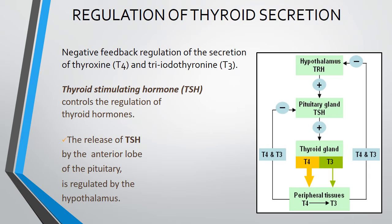Now, the regulation of thyroid secretion involves the negative feedback regulation of T4 and T3. The thyroid stimulating hormone (TSH) controls the regulation of thyroid hormone. TSH is produced from the anterior pituitary gland, and the releasing hormone TRH is produced from the hypothalamus. From the hypothalamus, TRH triggers TSH release from the anterior pituitary, which then stimulates secretion of T3 and T4 from the thyroid gland.